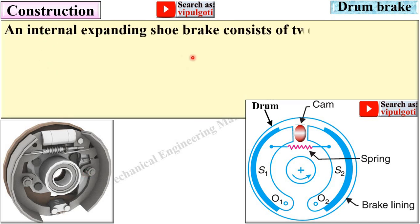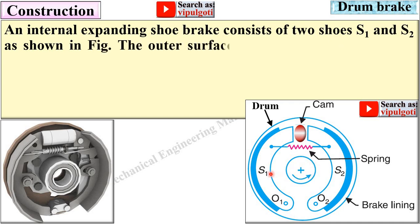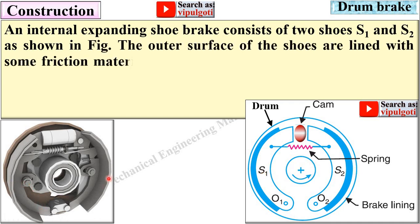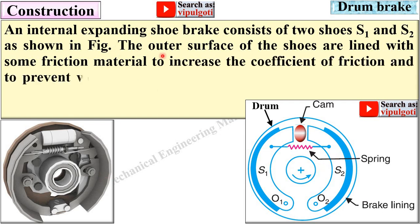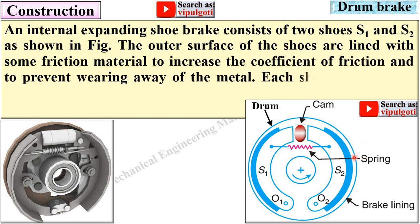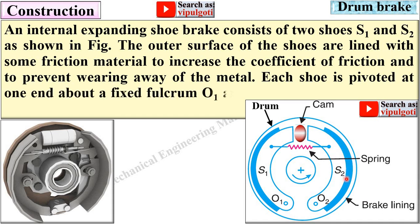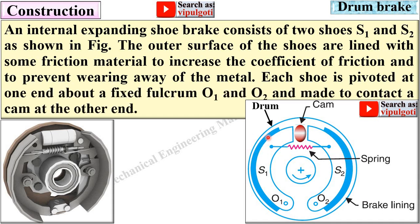An internal expanding shoe brake consists of two shoes S1 and S2. The outer surface of the shoes are lined with some frictional material to increase the coefficient of friction and to prevent wearing away of the metal. Each shoe is pivoted at one end about a fixed fulcrum O1 and O2, and made to contact a cam at the other end.